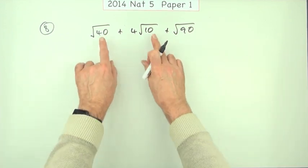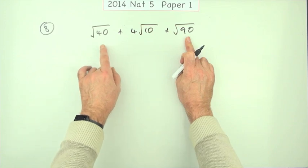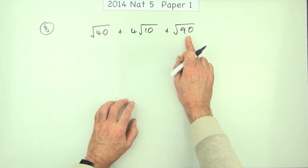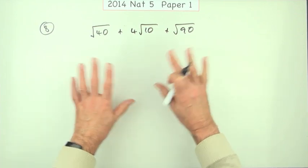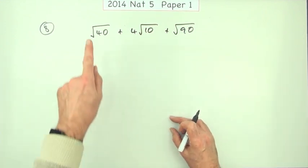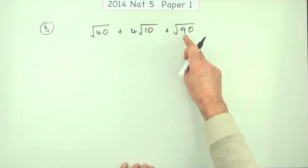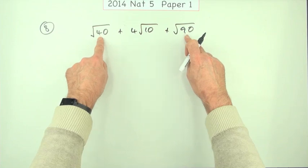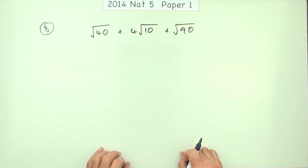Well, the first thing is you can't just add them and say something like the square root of 40 and the square root of 90 is the square root of 130. That's not correct. You can multiply surds, yes. The square root of 40 times the square root of 90 would be the square root of 40 times 90, which is 3600.